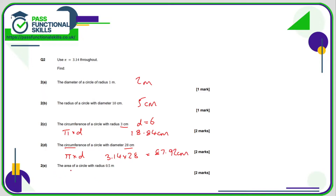And E, we're now on to area. The formula for the area of a circle is pi r squared — so that's 3.14 times the radius times the radius. That comes to 0.785, and since the radius is in metres, the area is in metres squared.